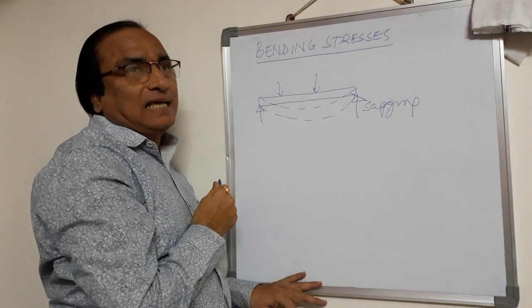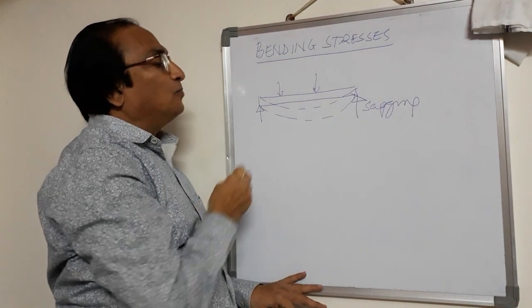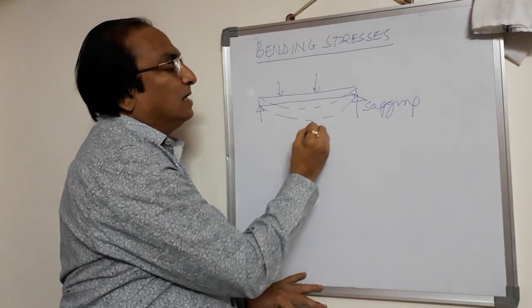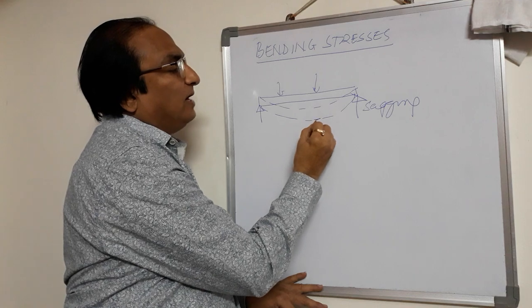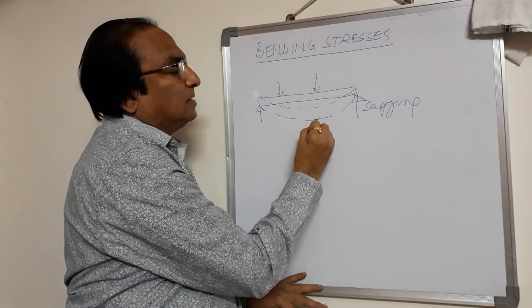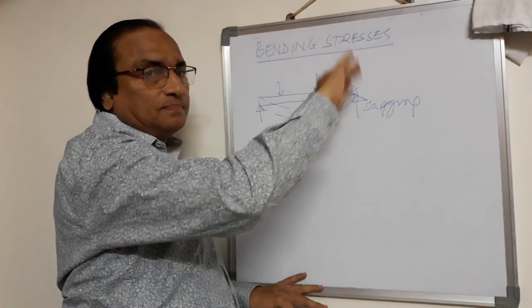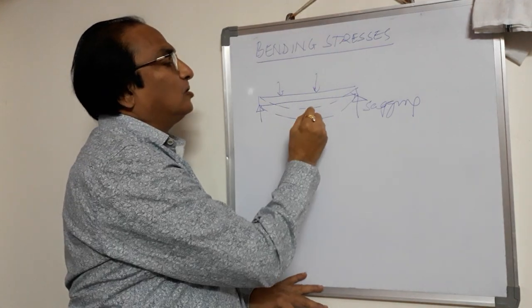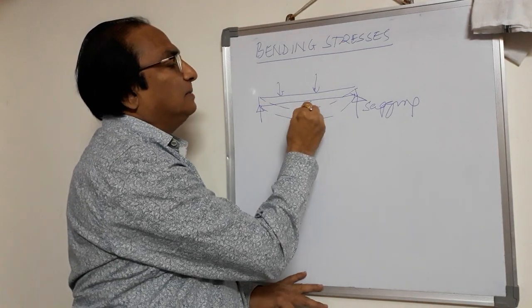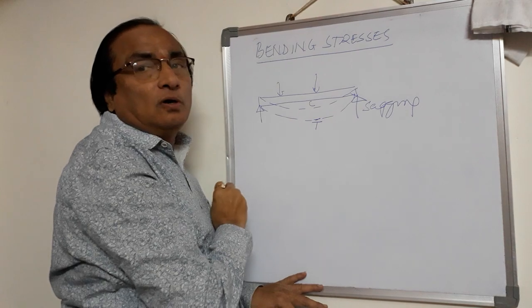It is bending in the sagging form. So when you see this, the bottom fibers are subjected to tension and the top fibers are subjected to compression.